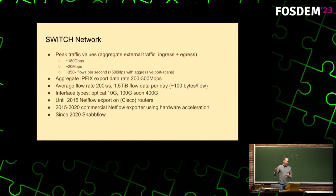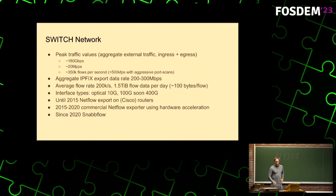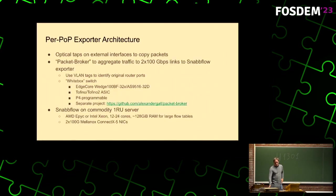We have 10-gig, 100-gig, and 400-gig ports — that's what our solution needs to support. We used to do this historically on the routers themselves until a couple of years ago. Then we moved to a commercial NetFlow generator that did that in hardware, which was pretty expensive — maybe 100,000 euros for one PoP. And then we finally moved to SnapFlow in pure software.